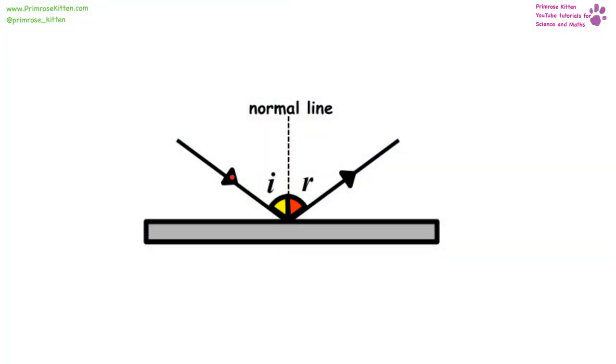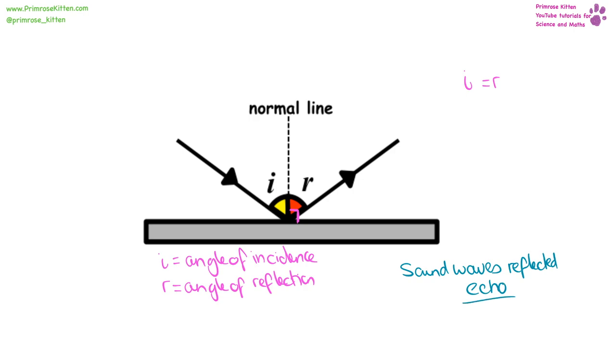When a wave is reflected, it is going to come in, meet the boundary, and then be reflected off. Our angle of incidence is always going to be equal to our angle of reflection, so we can say that I equals R. Your normal line is in the middle here, it is a dashed line drawn at 90 degrees to the mirror or surface that the wave is being reflected off. If we have a sound wave instead of a light wave that is being reflected, we are going to get an echo.